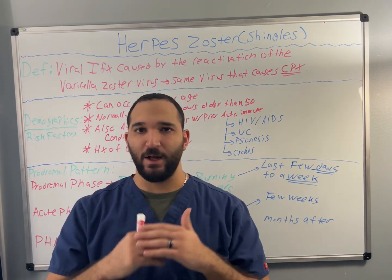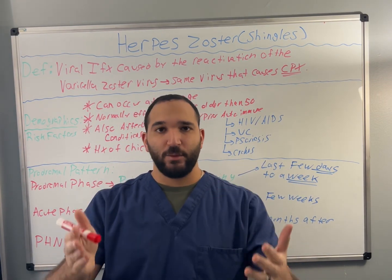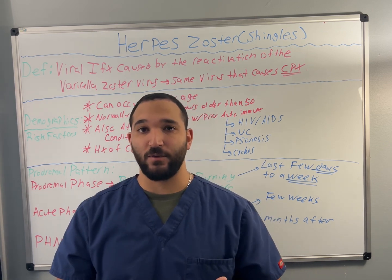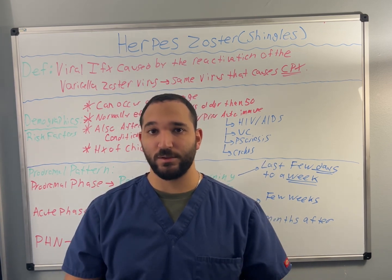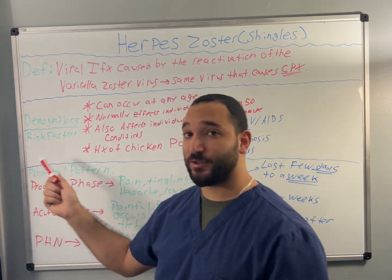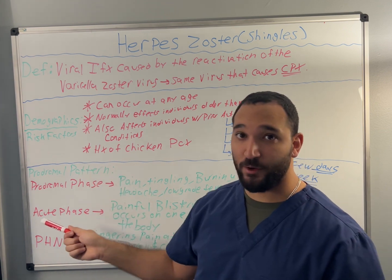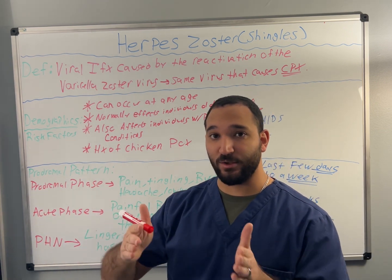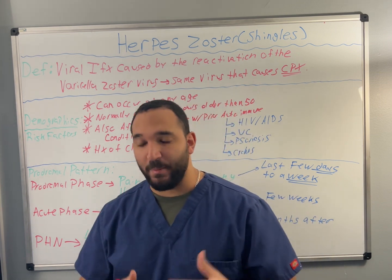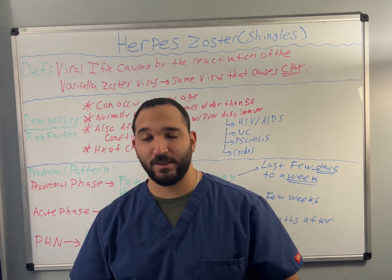Hi everybody. Today I'll be explaining the characteristics of herpes zoster. I'll be going over the definition of herpes zoster, also known as shingles. I'll be going through the demographics as well as the risk factors associated with it, the prodromal pattern in which herpes zoster progresses, the pathophysiology, and I'll wrap things up with a couple mnemonics.